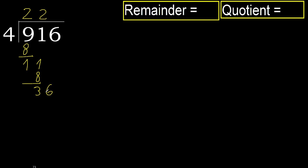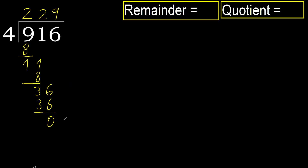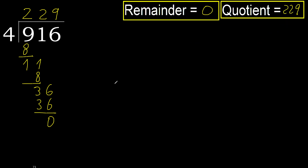Next: 36. 4 multiplied by 9 is 36, which is not greater. Subtract. There is no next number, therefore finish it. 0 remainder — therefore 916 divided by 4 is 229.